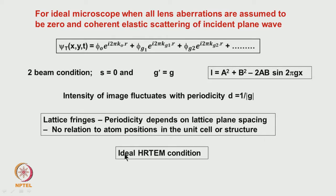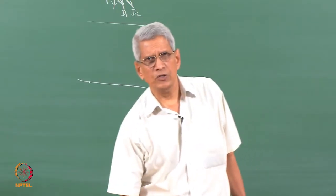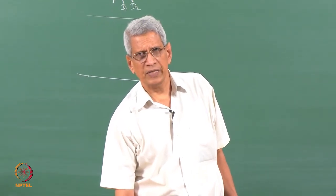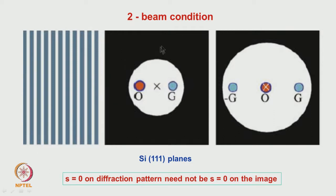Even so, this is an ideal high resolution electron microscopy condition. If lambda is smaller than the inter-particle spacing, point-to-point resolution is decided by the Rayleigh criterion, and in an ideal condition we should be able to resolve atoms. In a two-beam condition, two spots give rise to a fringe contrast.